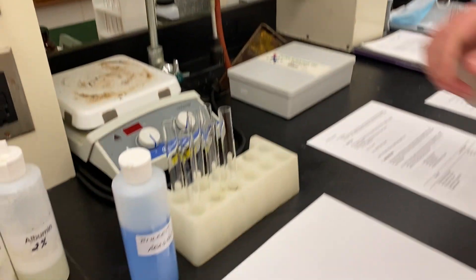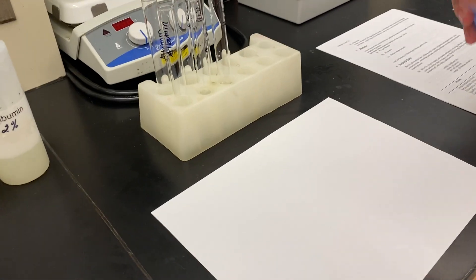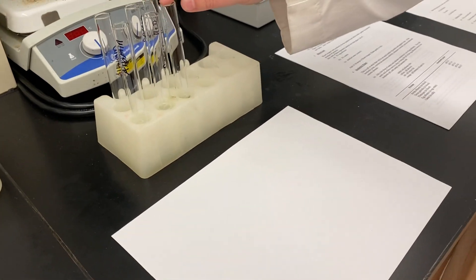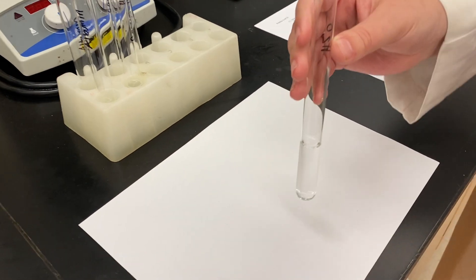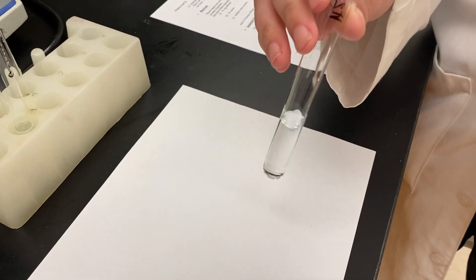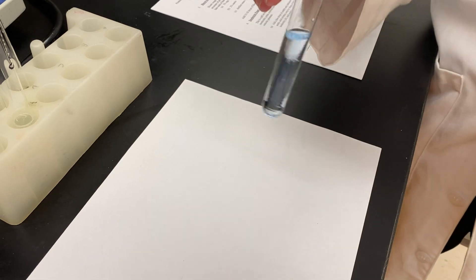What we'll do is we'll first start with water to take a look at the control group. We have two test tubes of water here. We're going to add, it says in your lab report, 15 to 18 drops. We're just going to do a nice squeeze. Eyeballing.